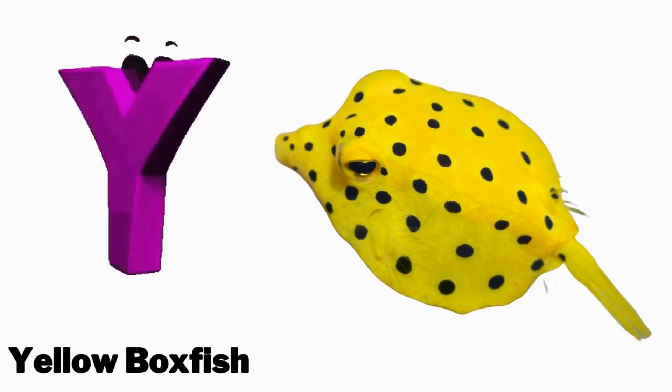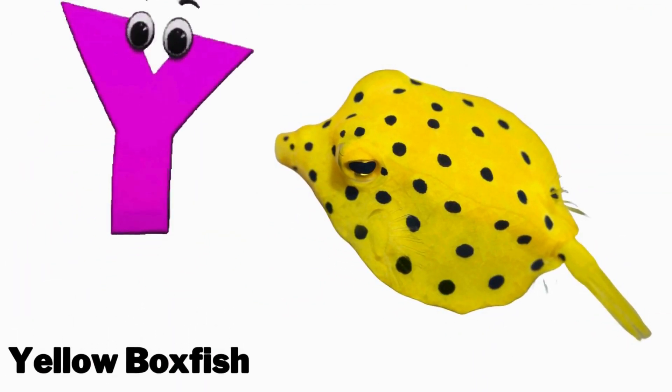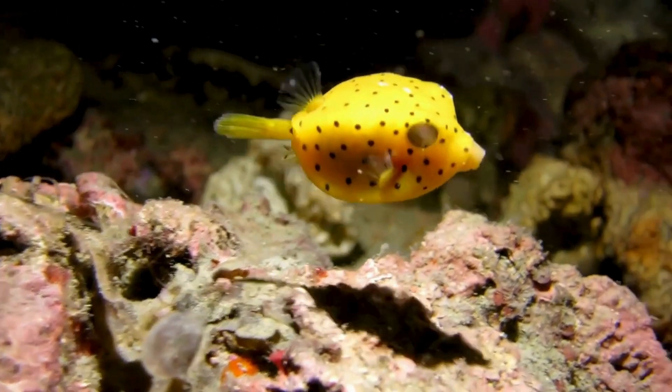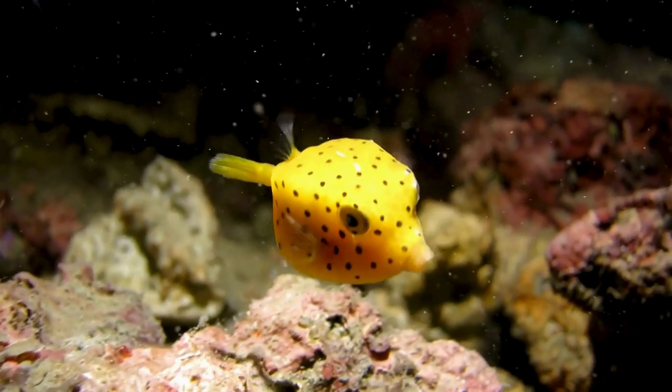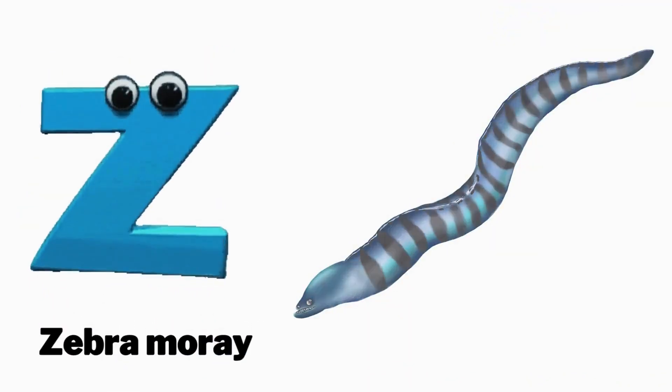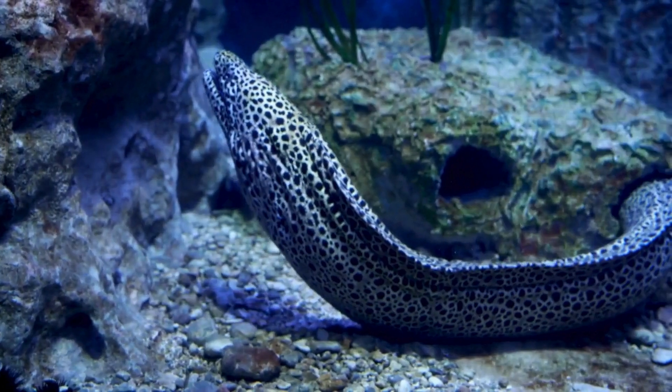Y is for yellow box fish, yeah, yeah, yellow box fish. Z is for zebra mora, z, z, zebra mora.